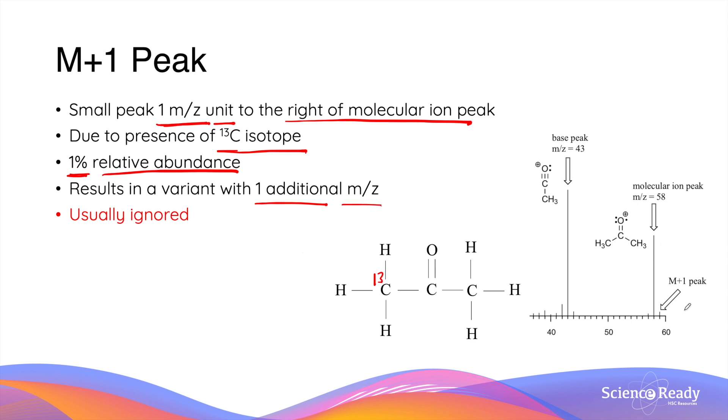In this case for acetone, this ratio corresponds to a number 59. The M plus 1 peak in a mass spectrum is usually ignored when analyzing a compound as it doesn't provide any useful information when ascertaining the identity of a particular sample.